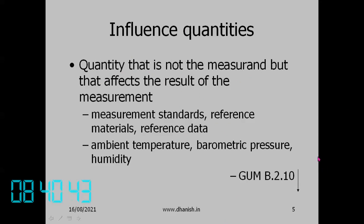Examples of influence quantities include measurement standards, reference materials, reference data, ambient temperature, barometric pressure, and humidity. In dimensional measurement, temperature is a very major influence quantity — any change in temperature results in a change in dimension. When we talk about sources of uncertainty, we are essentially talking about influence quantities. The VIM and GUM use this term.